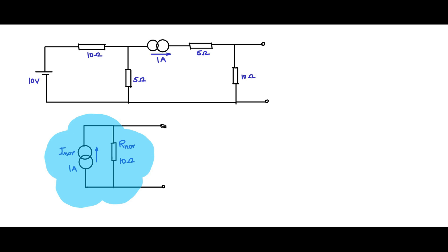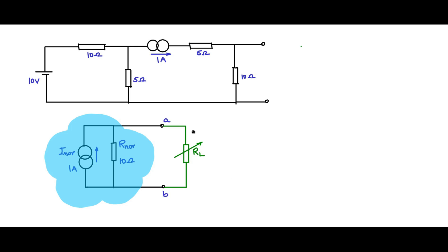To this Norton equivalent circuit, let us connect an external load resistance RL, where RL is variable. We need to find the value of RL at which maximum power is transferred to this load resistor.